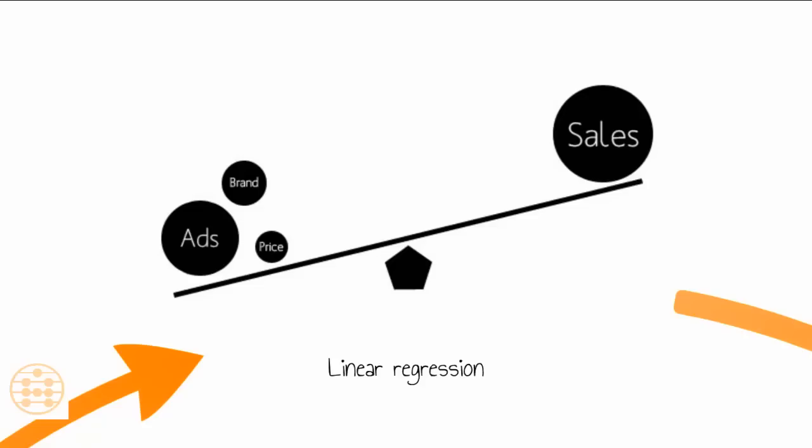Most of these numbers are decided by a lot of independent factors. So the sales of a product could depend on what was the brand, what was its price in the market, and how many ads were placed, for example. And if you were to study how these three factors influenced sales, you could use a linear regression in that scenario.